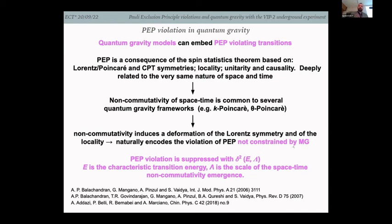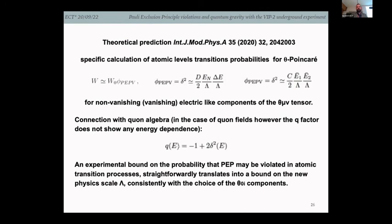At lower energies, PEP violation is suppressed as the square of theta times the square of the transition energy over lambda-squared, where lambda is the scale of spacetime non-commutativity emergence. For the theta-Poincaré, the transition probability is expressed as a function of energies for the non-vanishing and vanishing components of the theta tensor, connected to the quantum algebra. Experimentally, you investigate atomic transitions and translate bounds on forbidden transition processes to bounds on the new physics scale lambda.